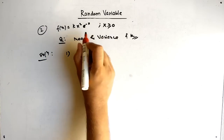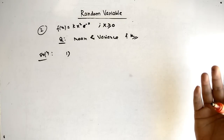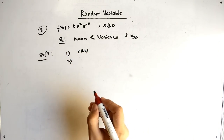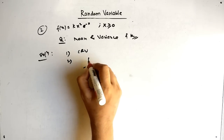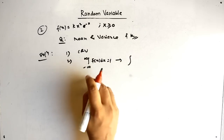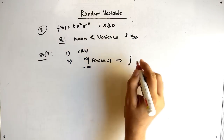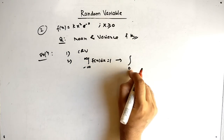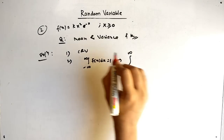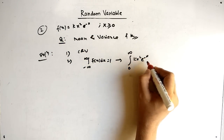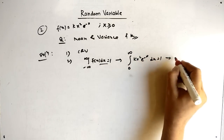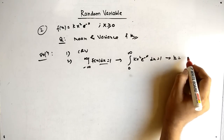Since x ranges from greater than 0, it is a continuous random variable. To find k, we use the formula: integral from minus infinity to infinity of f(x) dx equals 1. Substituting the range — lowest limit 0 and highest limit infinity — and f(x) = kx²e^(−x), then solving this integral gives k equals 1/2.